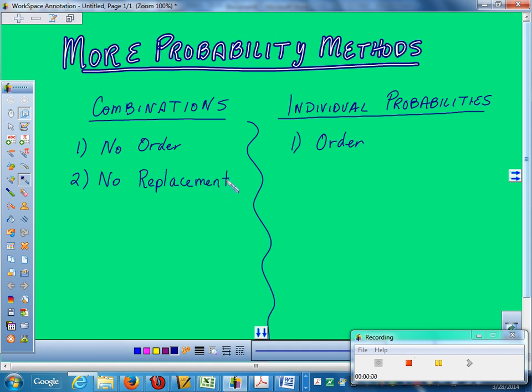So, combinations assume also that there's no replacement. You're not putting it back in once you take it out. If you do put it back in, then you're going to do an individual.